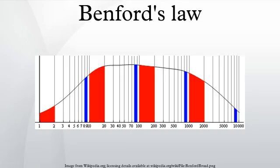Distributions that would not be expected to obey Benford's law include: where numbers are assigned sequentially, such as check numbers or invoice numbers; where numbers are influenced by human thought, for example prices set by psychological thresholds; accounts with a large number of firm-specific numbers, such as accounts set up to record $100 refunds; and accounts with a built-in minimum or maximum where no transaction is recorded.